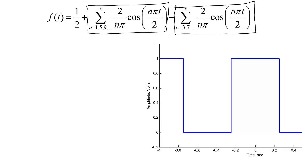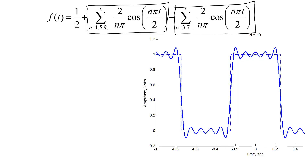Let's take a look at what the right-hand side of this equation does as I increase the number of terms in the series. If I include 10 terms in this series, my approximation is the solid blue line on this plot. The original function is the dotted blue line. They look sort of similar, but they aren't really very close for the most part. That's okay though, because 10 terms really isn't very many.